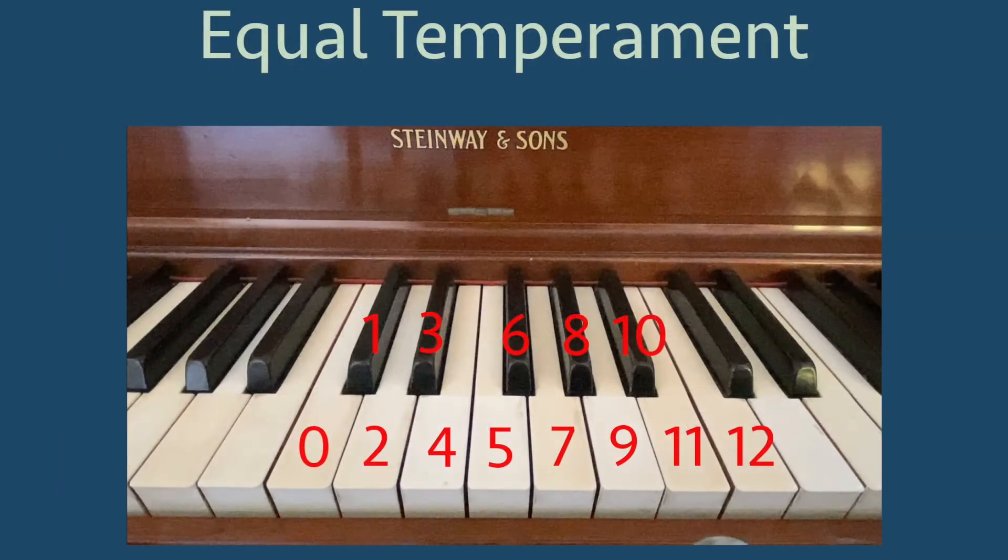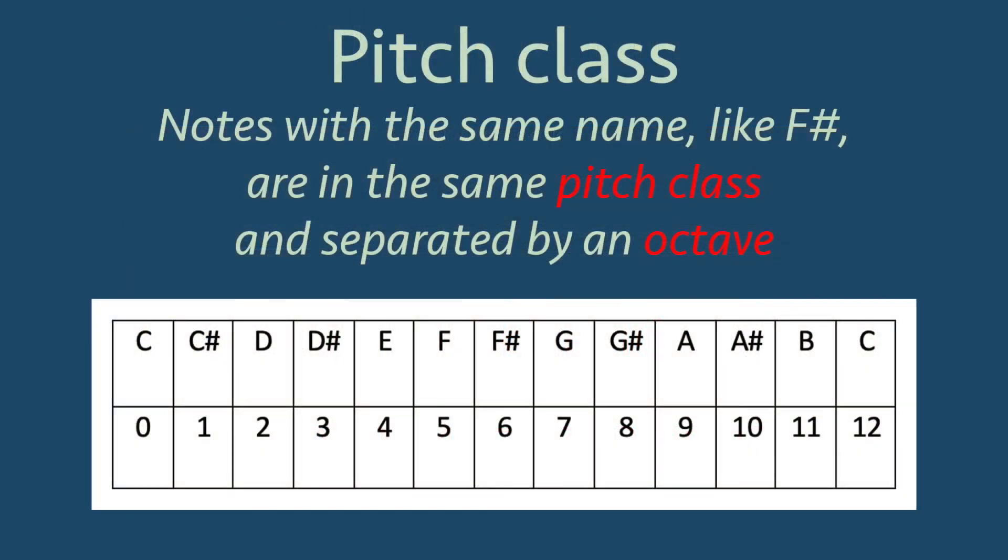We can observe this same modular arithmetic modulo 12 in the equal tempered tuning system. If we look at a piano keyboard and start at middle C, notating the number 0 for C, we can count 12 tones up to reach another C. With this labeling system, we consider all notes with the same letter name to be in the same pitch class, and the notes in the same pitch class are all separated by the interval of an octave.